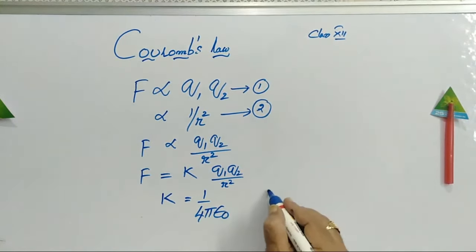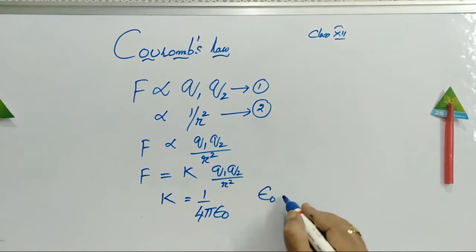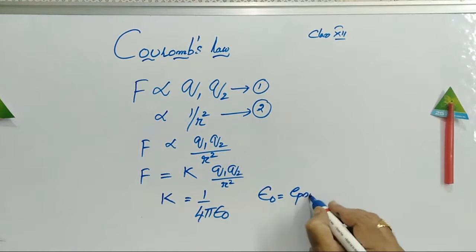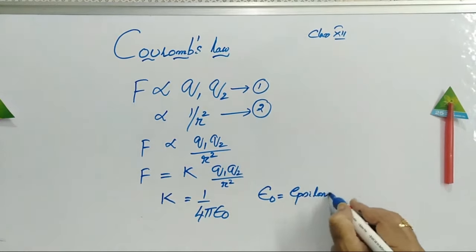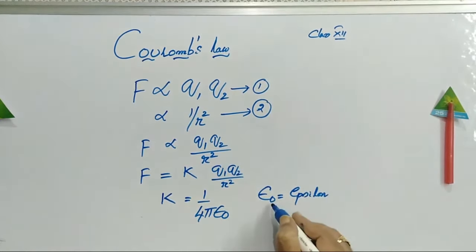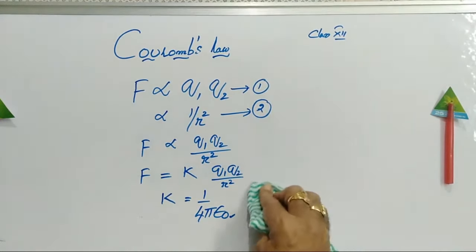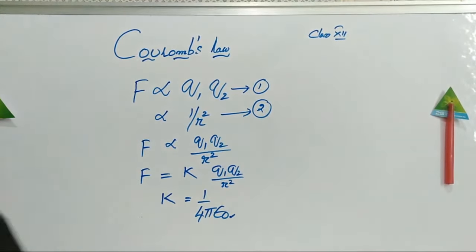The constant K is written as 1 by 4 pi epsilon naught. This symbol is pronounced as epsilon — a letter corresponding to E in Greek. Now, this 4 pi epsilon naught value...